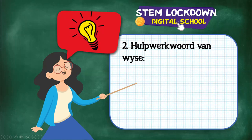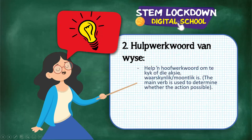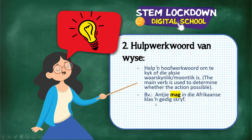A hulpwerkwoord van wyse — or manner — helps to determine whether the action is even possible. 'Ainkie mag in die Afrikaanse klas a gedig skryf.' 'Skryf' is my main verb. 'Mag' tells me something about the manner — may she write it, is it even possible for her to write it? This is not adverbs yet — I was also surprised the first time I actually studied this. This is still just hulpwerkwoorde.